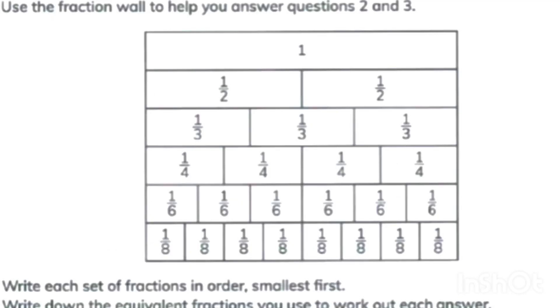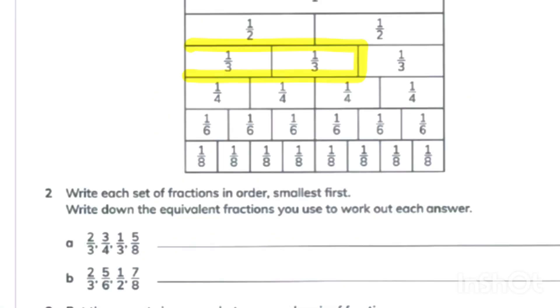In this question we have a fraction wall. The whole wall is divided into parts. 1 is the whole part. 2 is divided into 2 parts. 3 is divided into 3 parts and so on. Now we have to write the fractions in A and B in order from the smallest. Let's start with A.